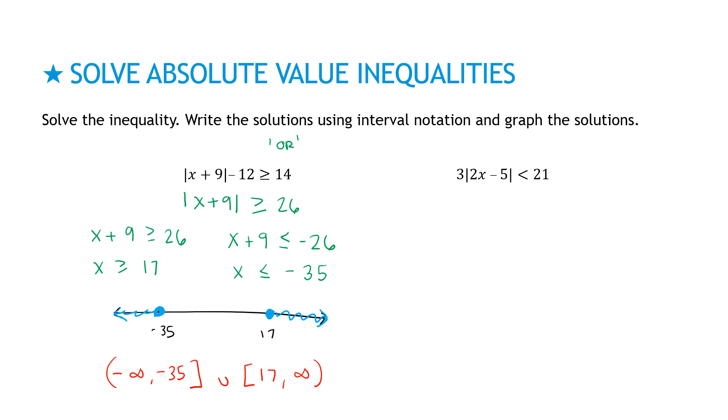For my second question, first thing I'm going to do is divide by 3. 2x minus 5 is less than 7. Now I can write it twice, but since this is an and less than question, then I can actually just write it as negative 7 is less than 2x minus 5 is less than 7. And then solve. So I'm going to add 5 everywhere. Negative 2 is less than 2x is less than 12. Divide by 2 everywhere. Negative 1 is less than x is less than 6.